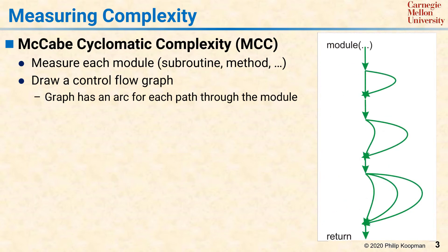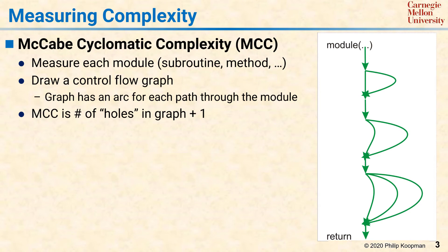Once you have drawn the flow control graph, you can compute MCC by counting the number of holes, or eyes, in the graph. Here we see the MCC is counted by looking at holes number one, two, three, and four, and then adding one more for the area outside the graph, giving an MCC total of five for this example. That final plus one is so that a module with no branches at all still has an MCC of one.